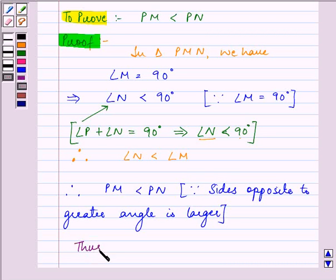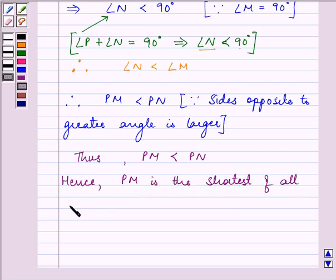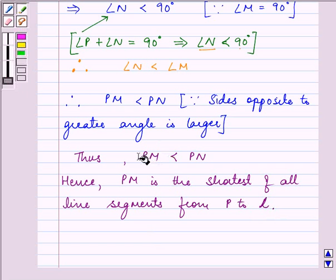Thus we can say that PM is less than PN and hence PM is the shortest of all line segments from P to line L. So this completes the question that was given to us.